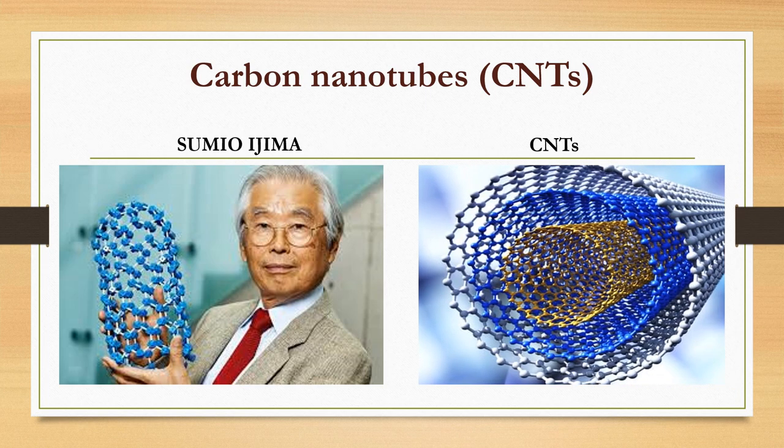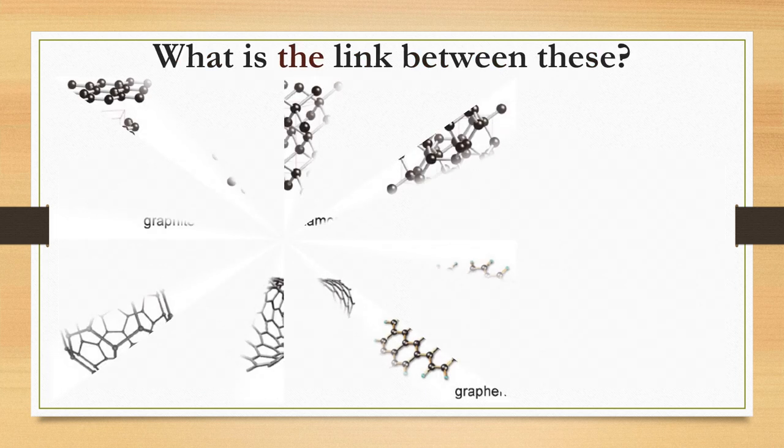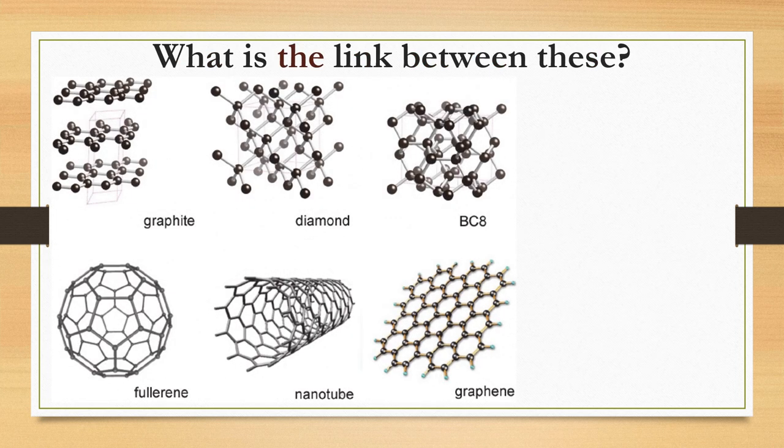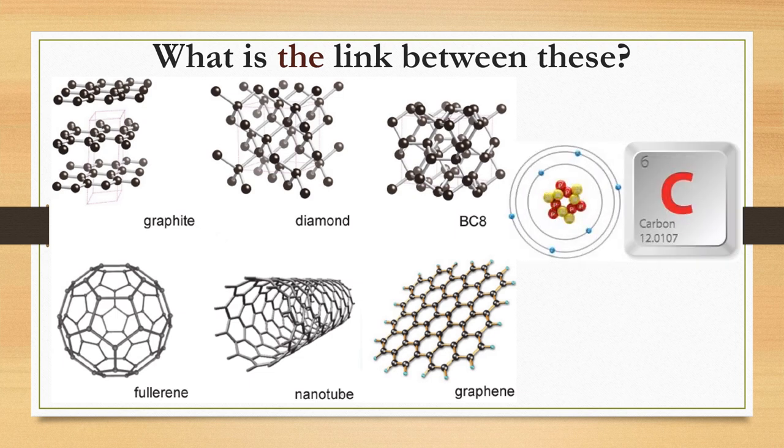CNT is one of the carbon allotropes, a one-dimensional carbon form which can have an aspect ratio greater than 1000. What is the link between graphite, diamond, BC8, fullerene, nanotube and graphene? It is carbon.